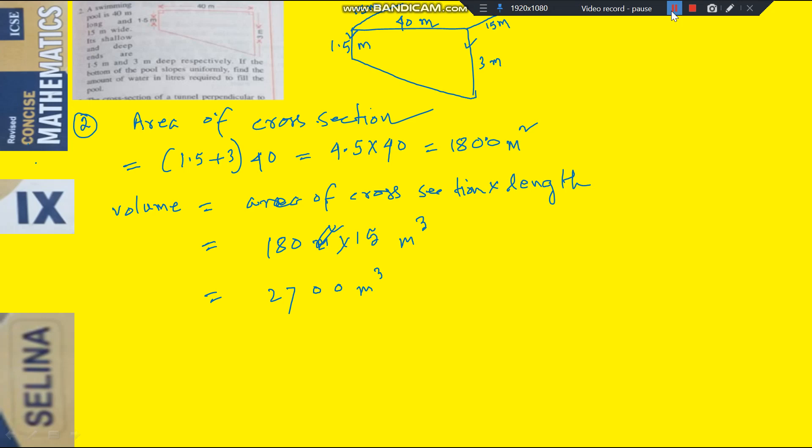1,000. Wow! Very good. Answer check karo. See here, 1 meter cube equal to 1000 liters. So if you multiply, you are getting 27, then 5 zeros liter. What is the answer? You tell me. Is this correct?